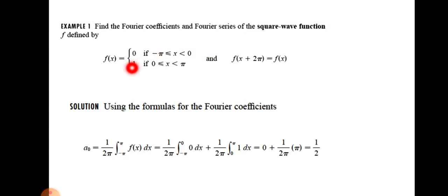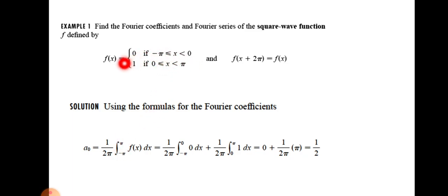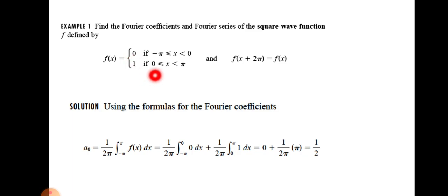For Example 1, f(x) is a piecewise function — find its Fourier series. First, we find the Fourier coefficient a₀ using the formula: one over 2l times the integral from negative l to l. Here l equals π because the function is defined from negative π to π. We divide the integral into two parts: from negative π to 0, where f(x) equals 0, and from 0 to π, where f(x) equals 1. The first integral vanishes, so we evaluate only the second, giving a final answer of one-half.